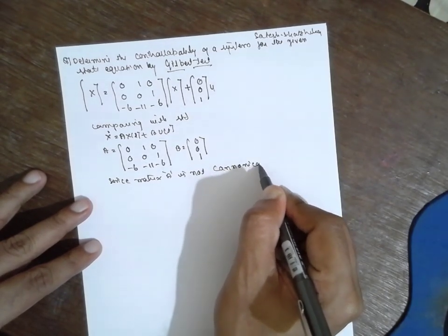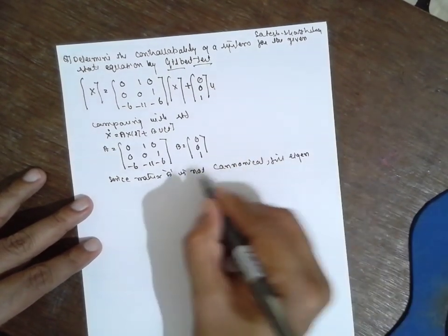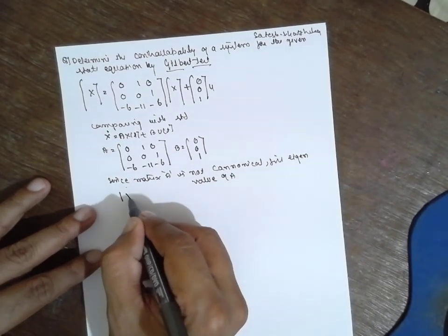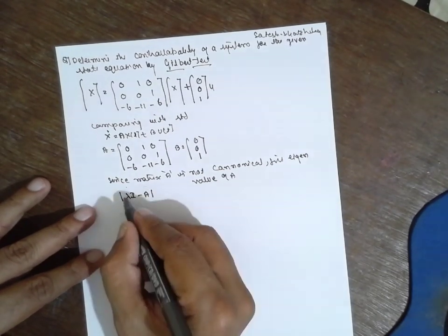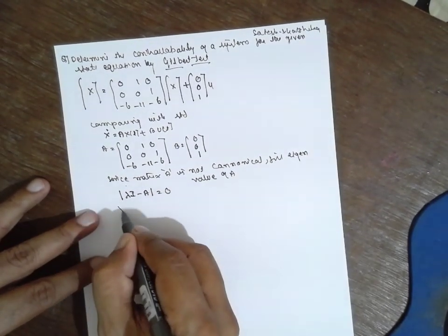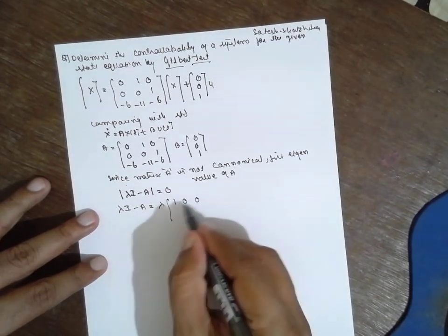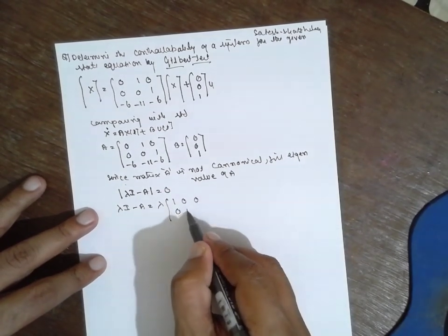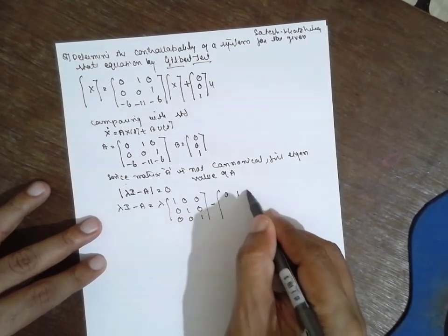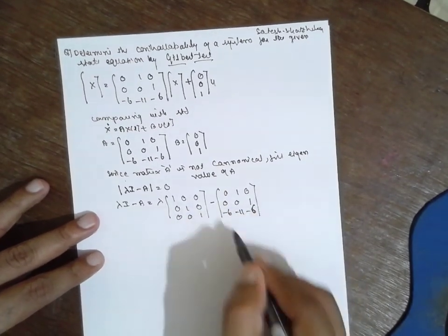We need to find the eigenvalue of A. The eigenvalue is found using the determinant: |λI - A| = 0. I is the unit matrix. λI - A equals λ times the unit matrix [1,0,0; 0,1,0; 0,0,1] minus the matrix A which is [0,1,0; 0,0,1; -6,-11,-6]. Subtracting these gives us the expression to evaluate.